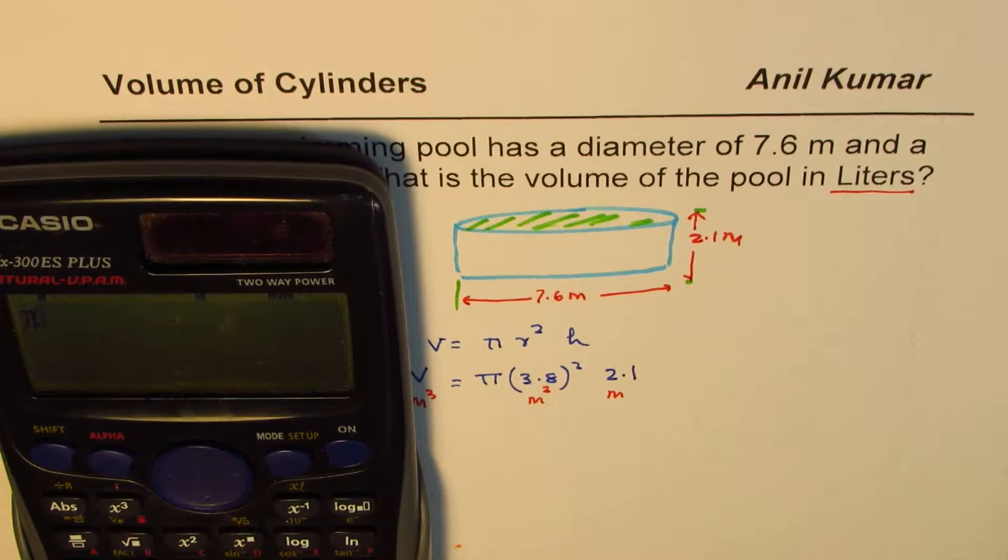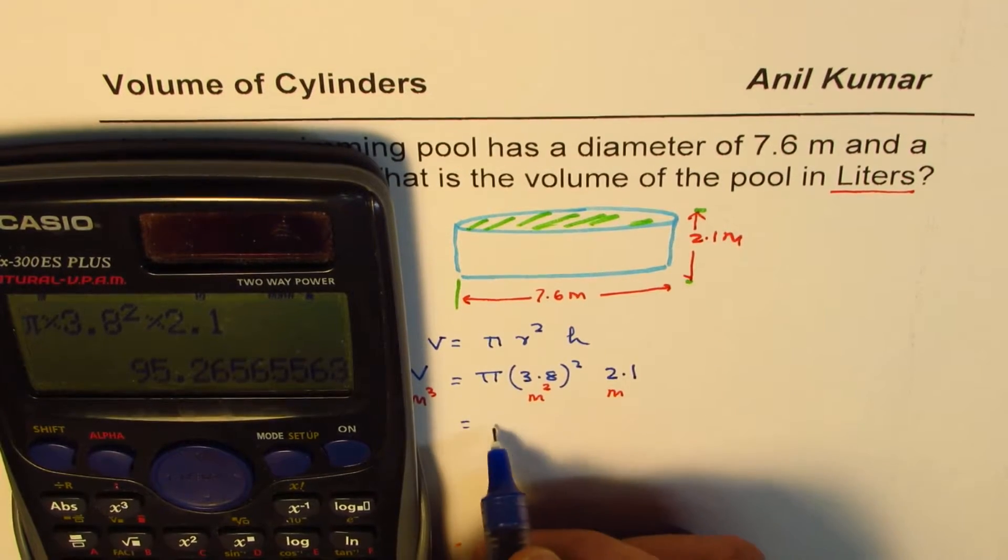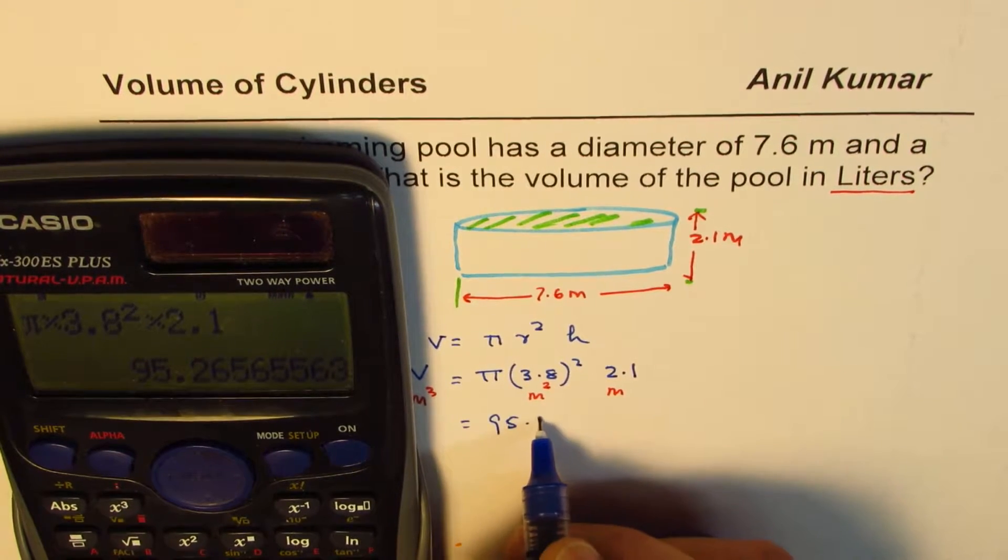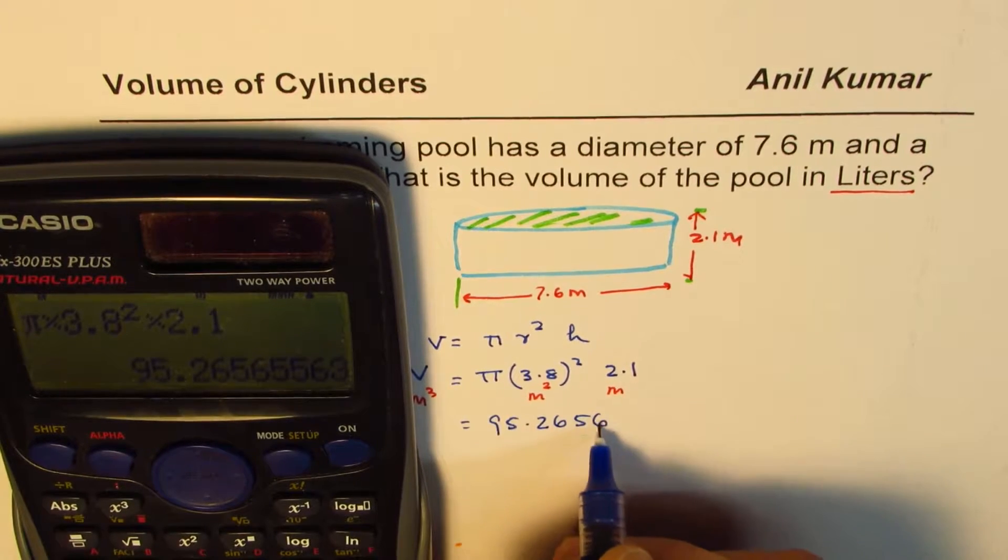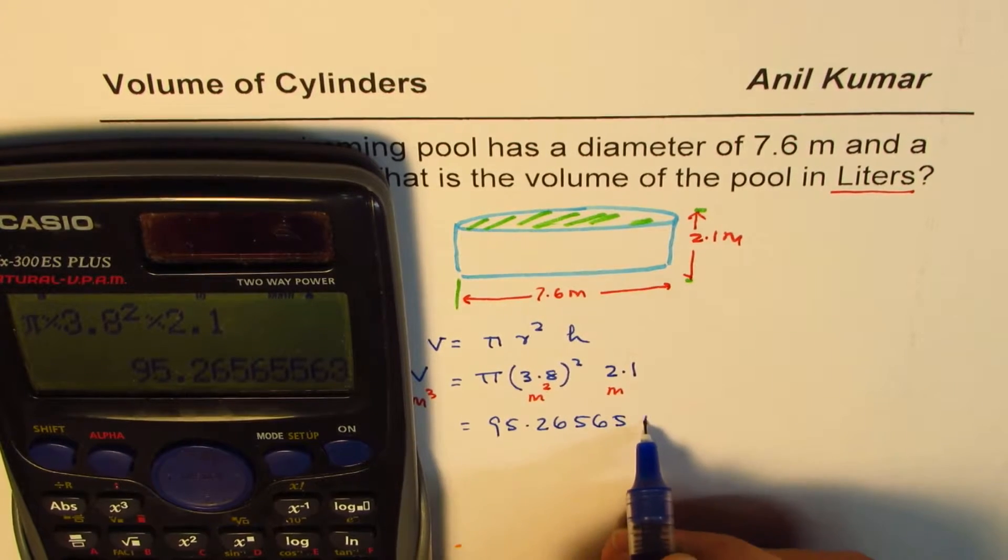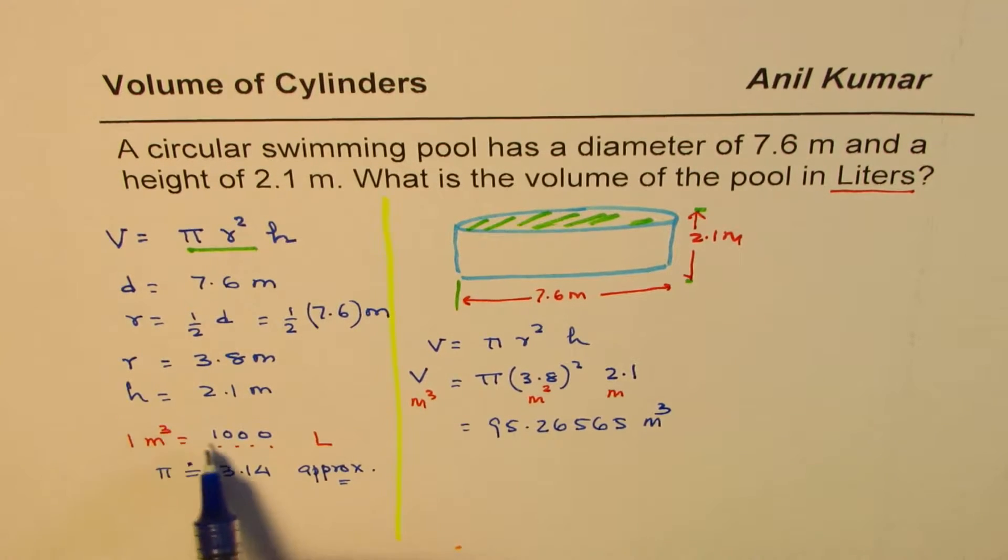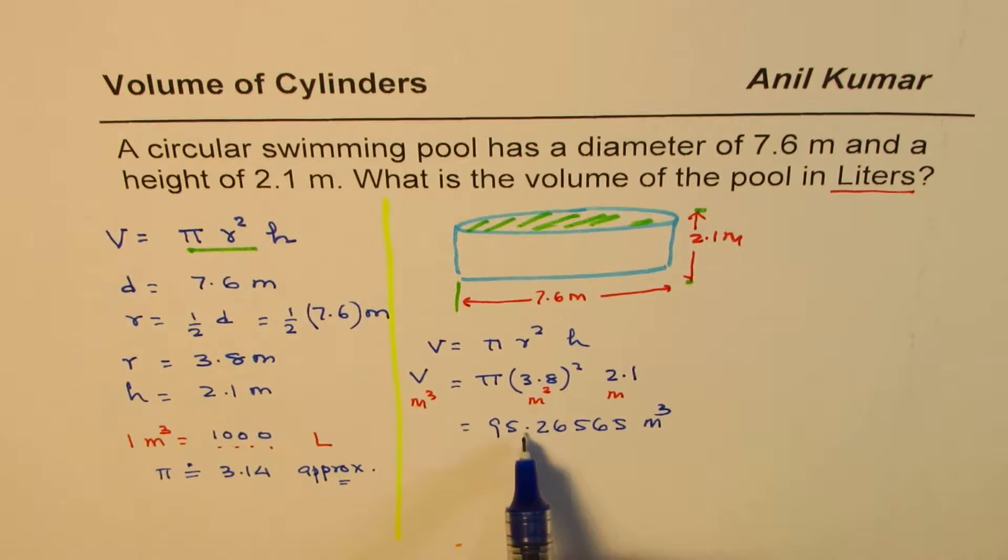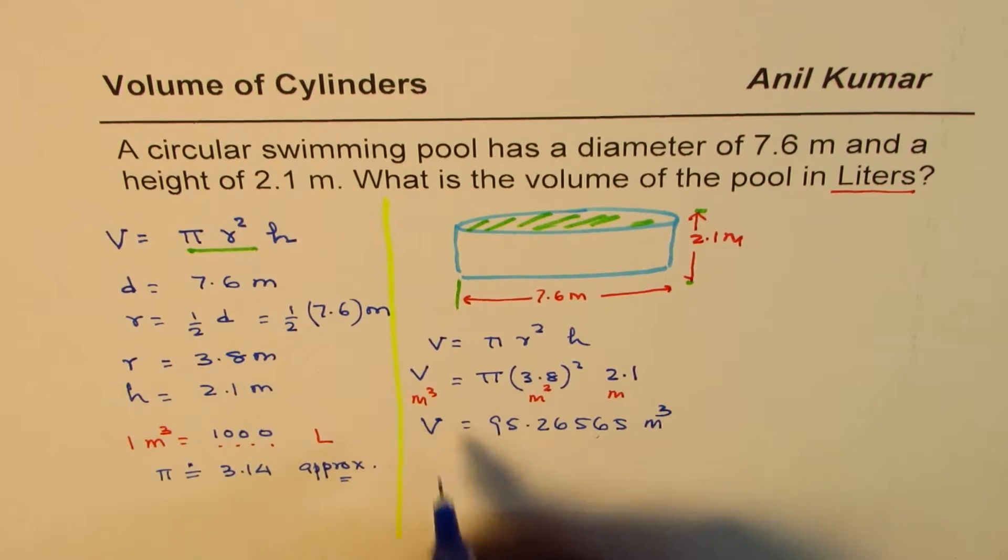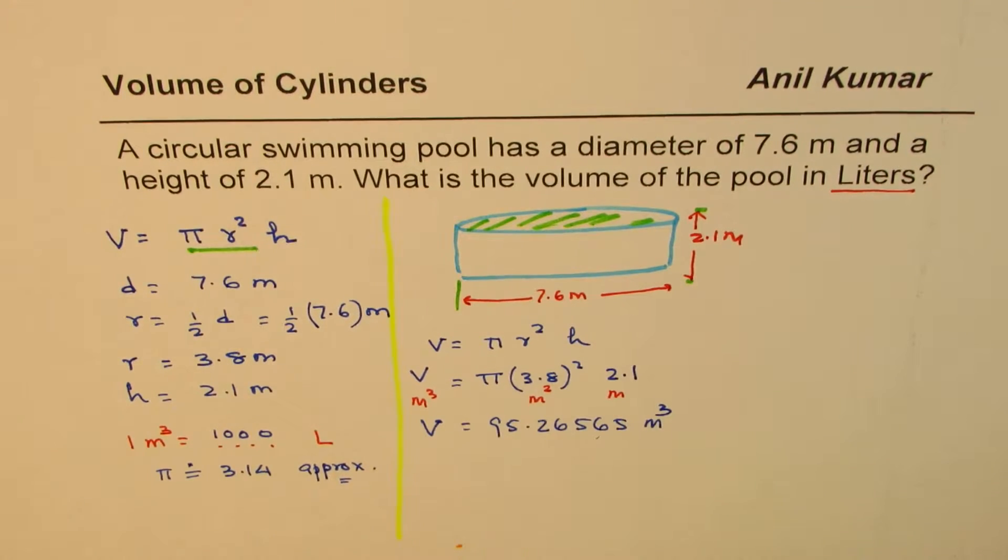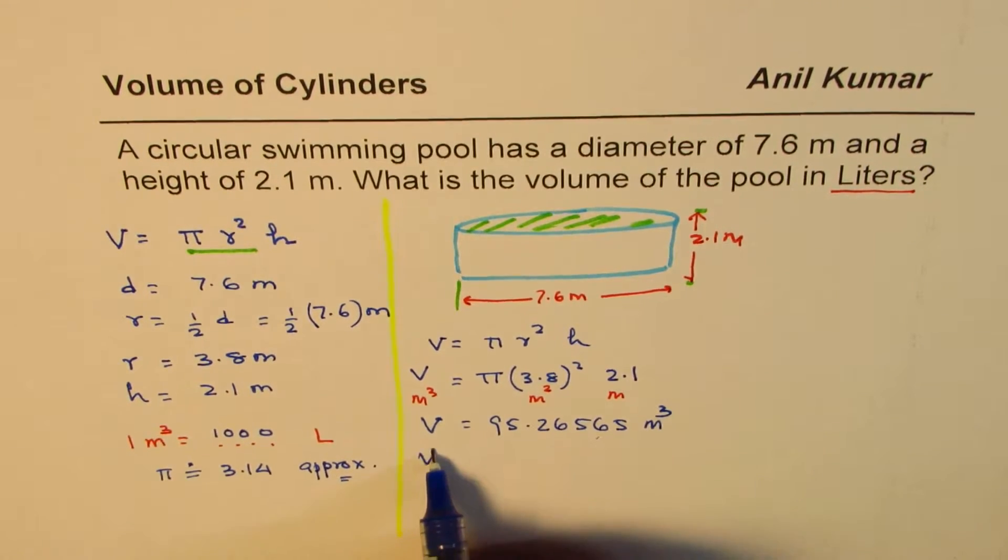Shift and this key gives me π, and then I'll multiply this by 3.8 square times 2.1. That gives me 95.26565. I'm going that far since you can see the conversion between meter cube and liter is 1,000 times, so I need to shift this decimal to the right.